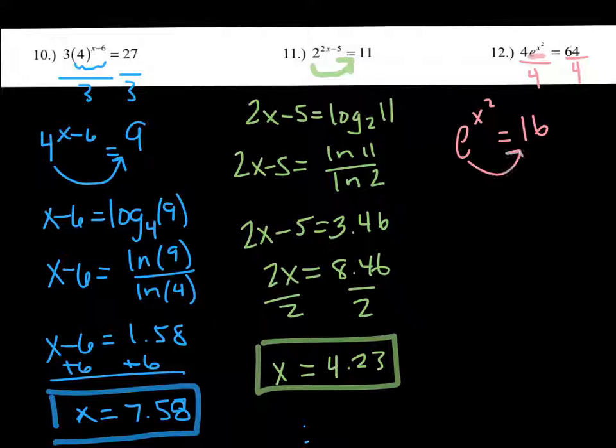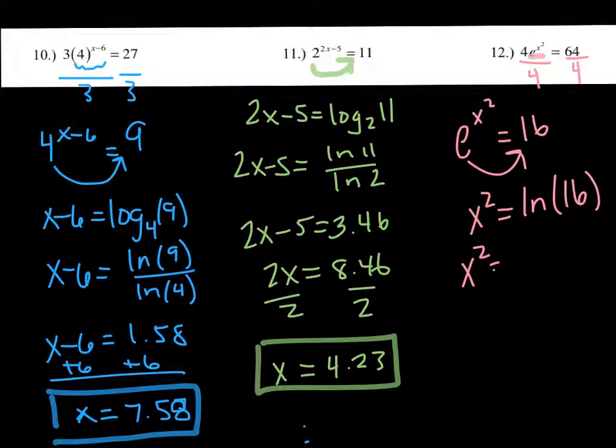We're going to undo the e, just like we've undone any other base. We just have to remember that when we do that, the inverse or opposite of an exponential expression with base e is the natural log. So we'll have natural log of 16. That's it. Type in ln of 16, natural log of 16. And you should get 2.77.